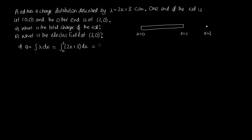Solving the integral: integrating 2x gives x squared, integrating 3 gives 3x, evaluated from 0 to 2. This gives 4 plus 6 minus 0, which equals 10 coulombs as our total charge.